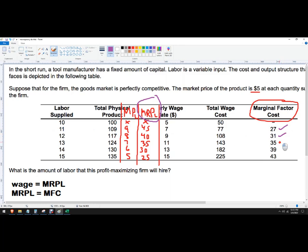35 and 35, this is where they equal, that's where we're going to stop. And 39 and 30, no. So the amount of labor this profit-maximizing firm is going to hire is going to be 13 workers, or 13 hours, or however the number of workers is supplied.